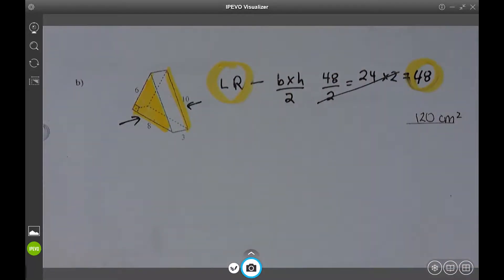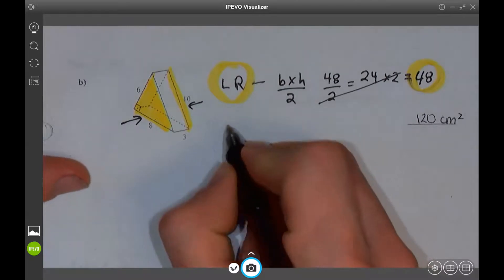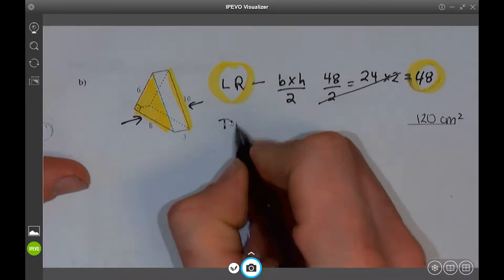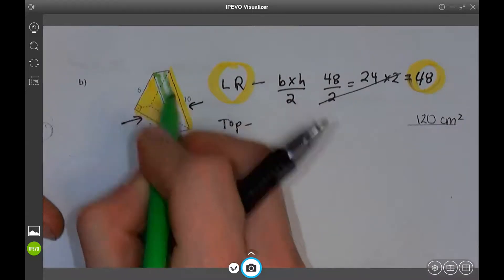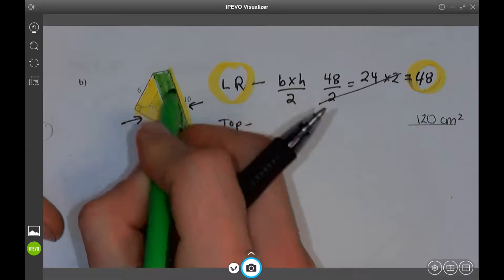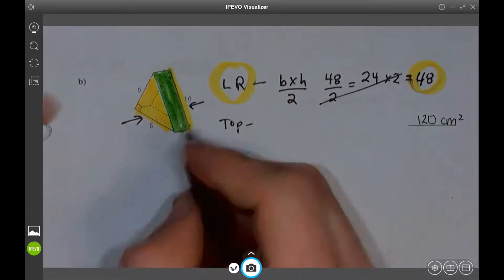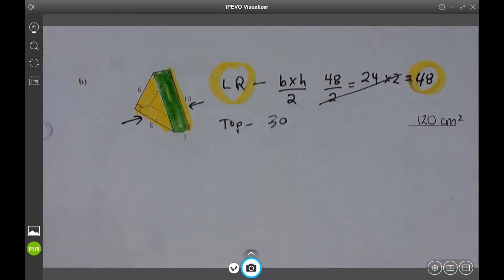So now I'm going to do each face individually. I'm going to call this one top. I'm going to color it green as my top. And what's the top face? 3 times 10. 30. There's my top.